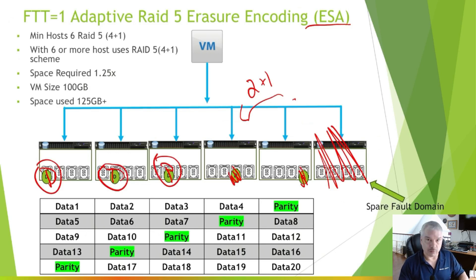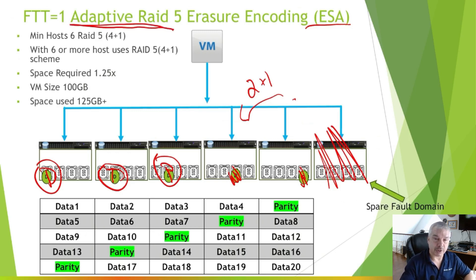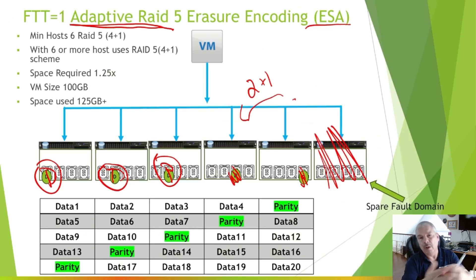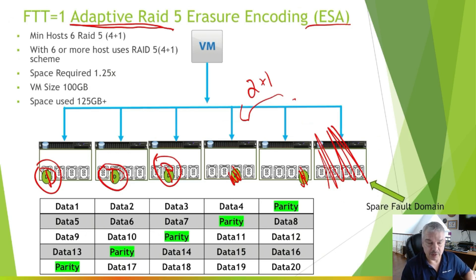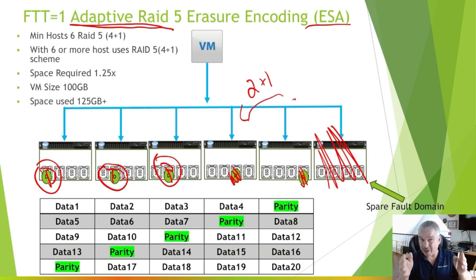I don't know if you can disable or configure that timing, but that's what's new in vSAN Express Storage Architecture with Adaptive RAID 5. Thanks again to the subscriber who brought this to my attention — keep me honest in the comments below. Hit a thumbs up if you liked it, subscribe to the channel, I've got more vSAN and vSphere performance content coming. If you want to see something, make a request and I'll do my best. Thanks, have a great day!